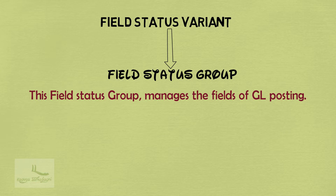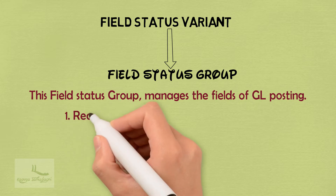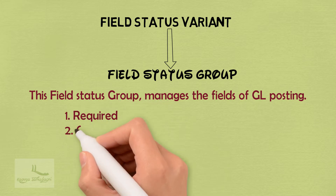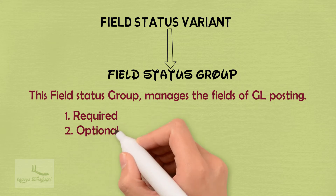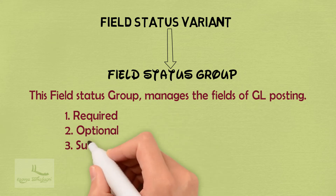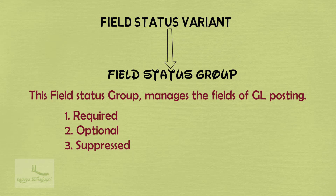This field status group always manages fields in three ways. The first way is by making the fields as required. The second way is by making the fields as optional. And the third way is by making the fields as suppressed.